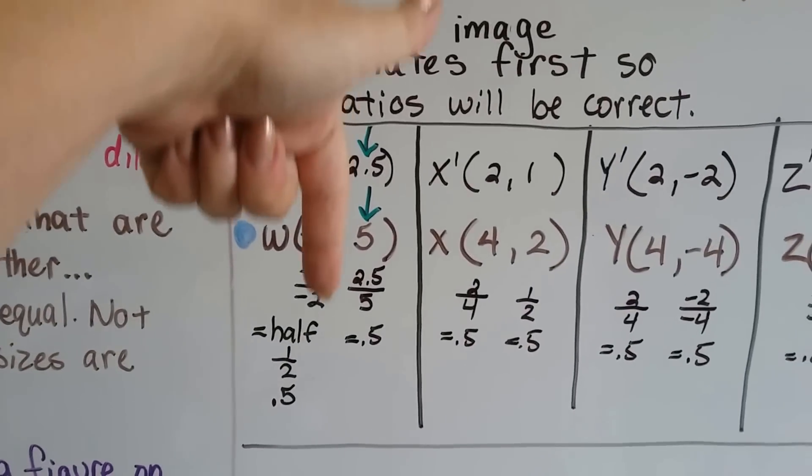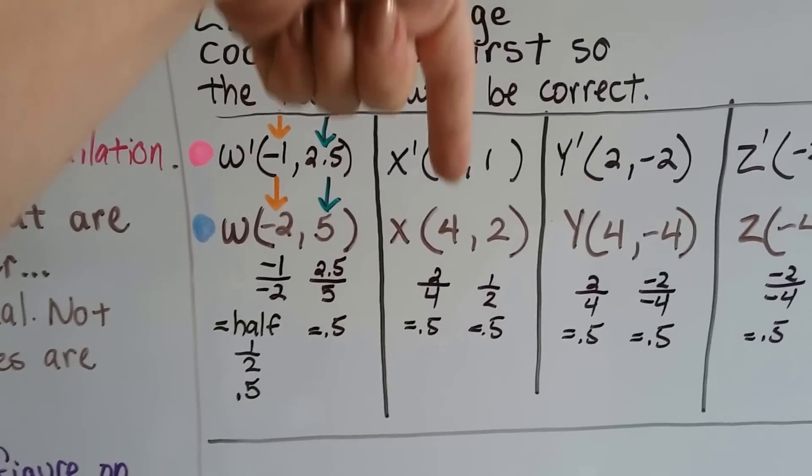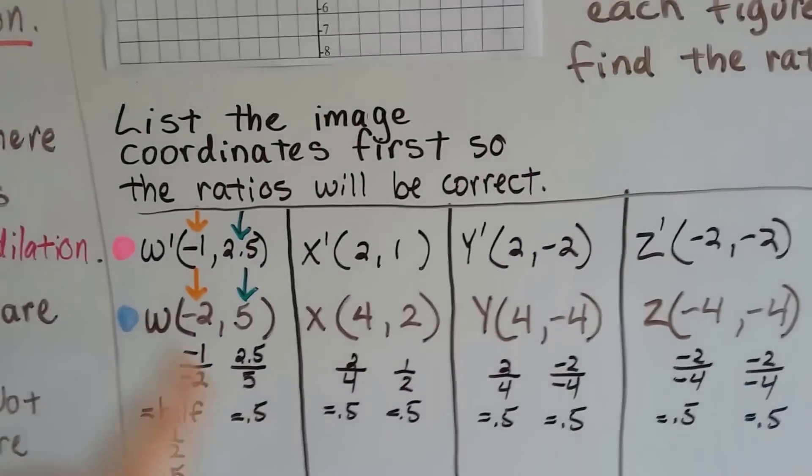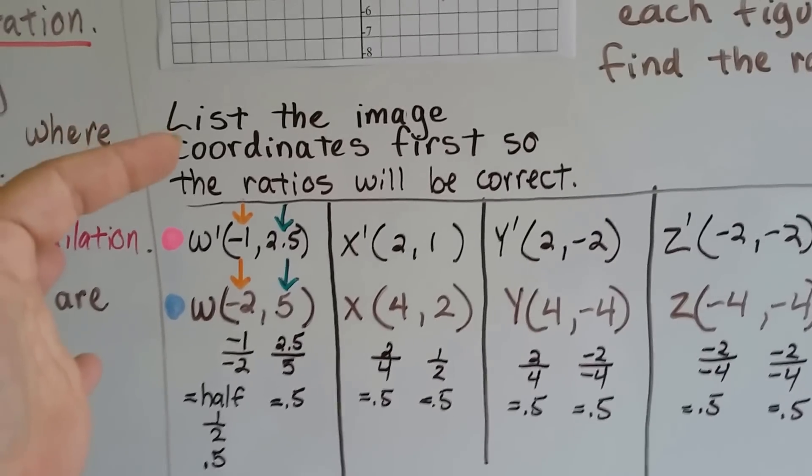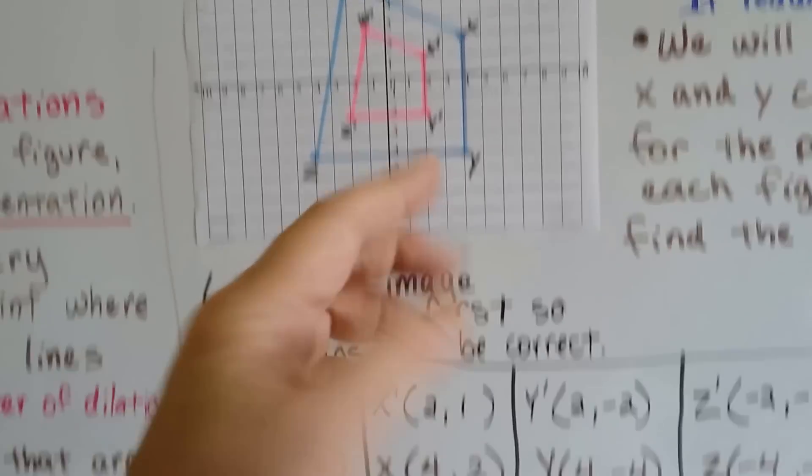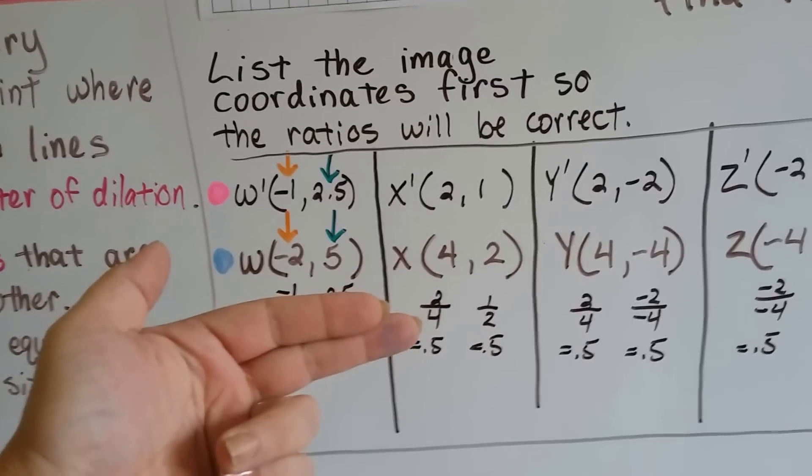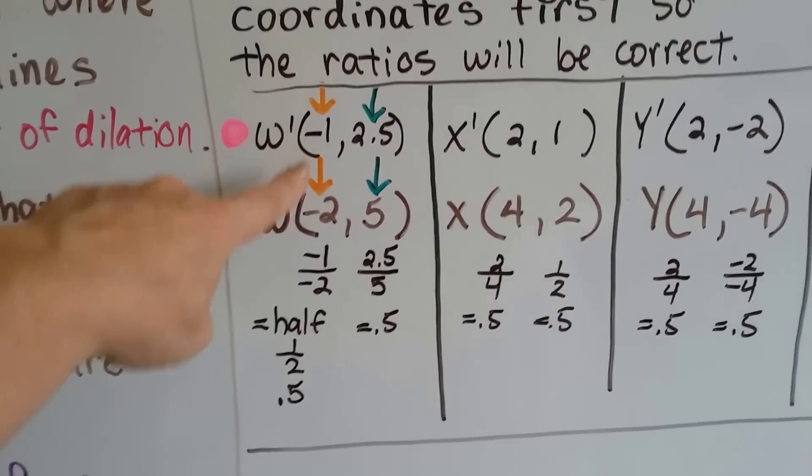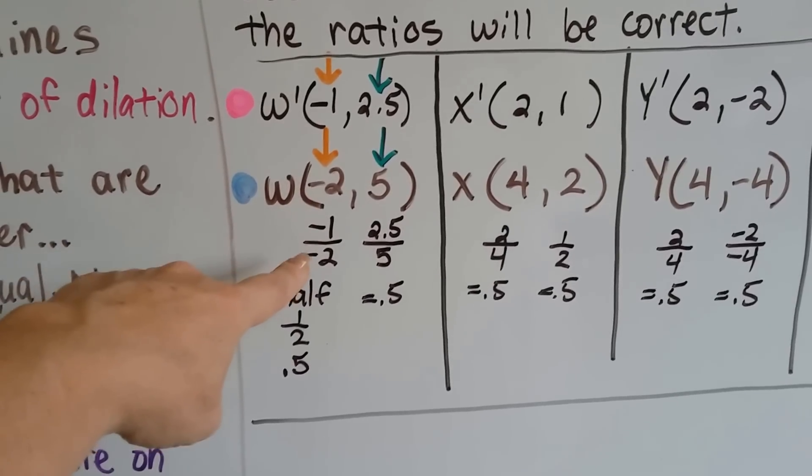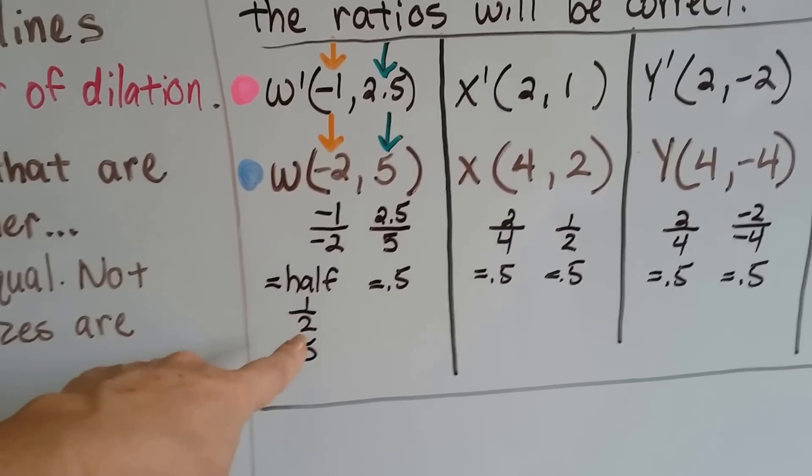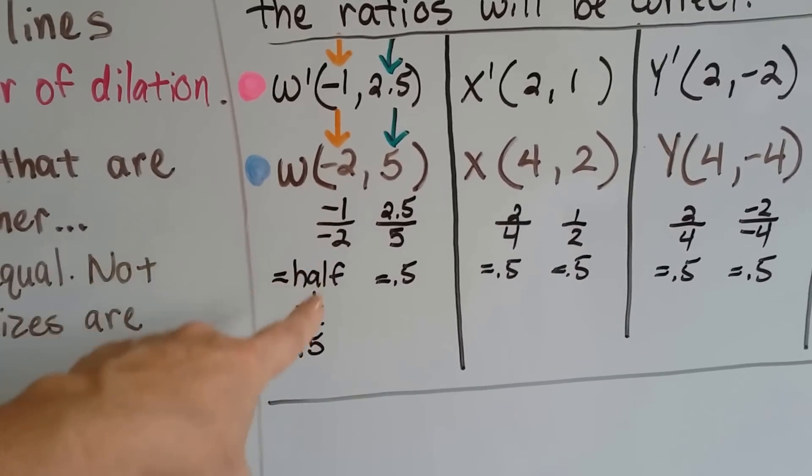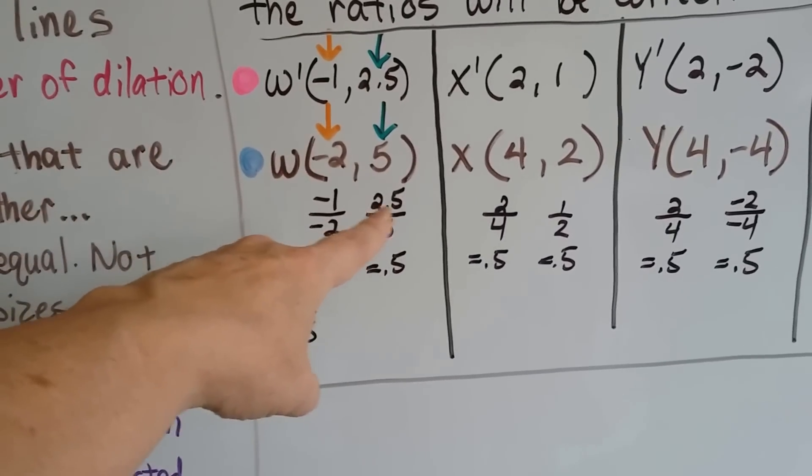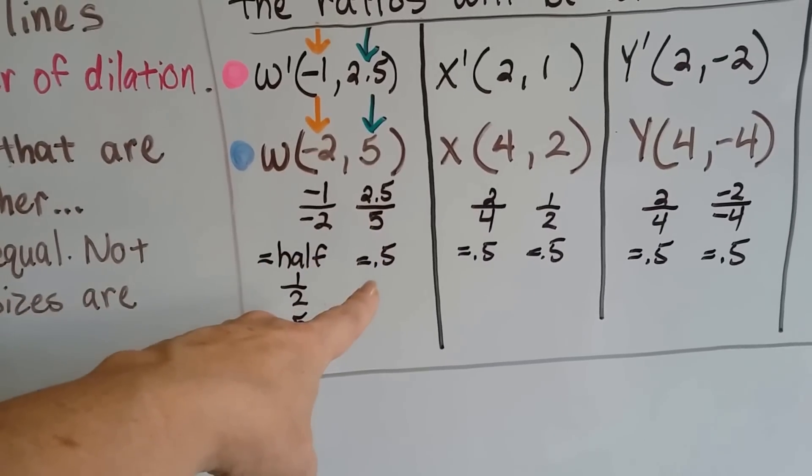And what we're going to do is we're going to come down like this with each x value and each y value and we're going to make a fraction out of them. And we can do this because we followed our little rule of listing the image first. You list the copy first and then you put the original underneath it for the coordinates. That'll give you your ratio. That gives us negative one over negative two. Well, negative one over negative two is a half. It's one over two because these two negatives cancel each other out as a positive. That's point five. Two point five over five. Well, that's two and a half over five. That's half also. That's point five.